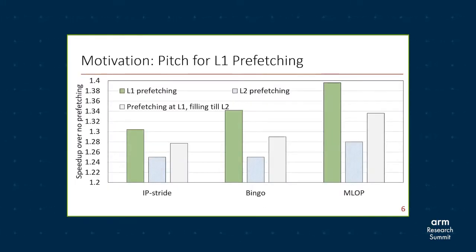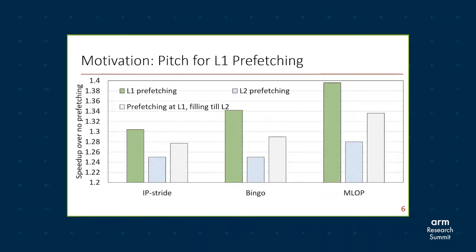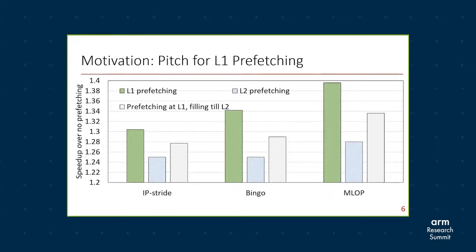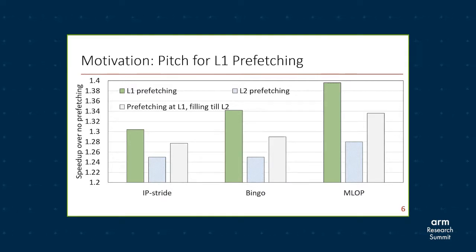Let's look at the utility of prefetching into L1. In this plot, we are showing performance improvement when the prefetcher is at L1, prefetchers at L2, and a case where the prefetcher is at L1 but fills only till L2. Note that we are not showing performance for all prefetchers because some prefetchers proposed for L2 are not fit for L1 — for example, the delta-based prefetchers. As you can see, in all these prefetchers, prefetching at L1 improves compared to prefetching till L2 or prefetching at L1 but filling till L2, showing that prefetching at L1 is actually a promising idea.